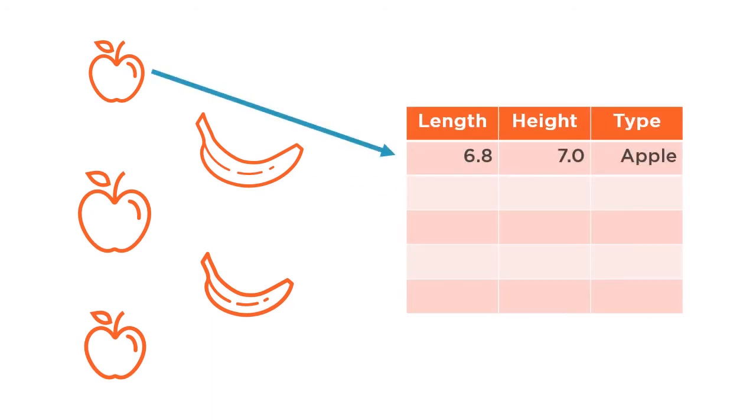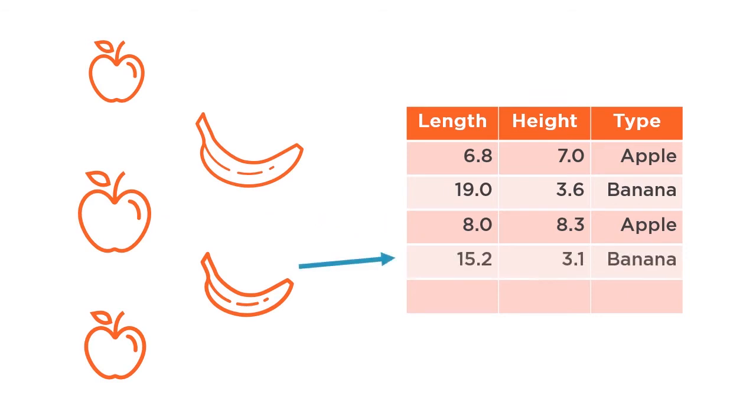First, we would need to create a table of data called a training set. This data set contains the lengths and heights of a bunch of randomly selected apples and bananas. When recording these data, a human would label each type of fruit in each row as either an apple or banana based on visual inspection.